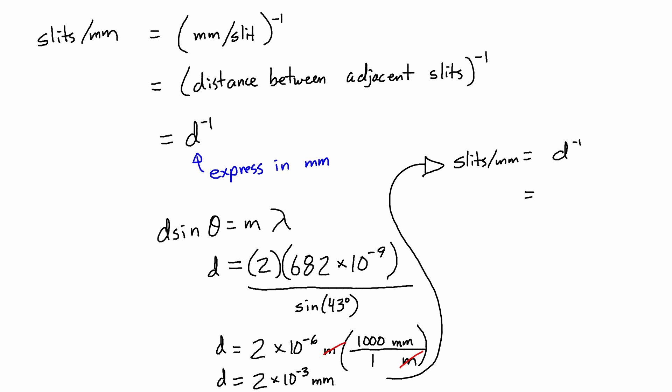So to invert that, then, to find the slits per millimeter, then I find that there are 500 slits per millimeter. And that's it. So one of the odd things about this that a lot of students, in my experience, don't think of at first is when you're finding the slits per millimeter,